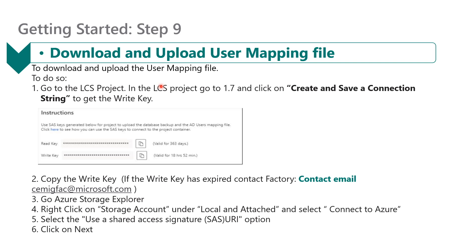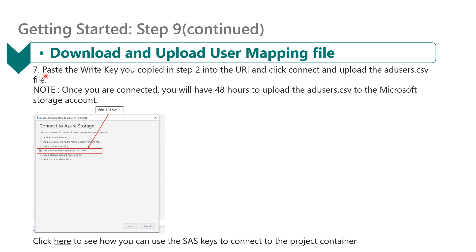Once you've reached out to the Microsoft factory team, they will respond asking you to download and upload the user mapping file. Go to the LCS project, click on 1.7 and select Create and Save a Connection String. Click on the right key and copy it — if the right key is expired, contact the factory team so they can renew it. Go to Azure Storage Explorer, right-click on the storage account under Local and Attached, select Connect to Azure, select the Use a Shared Access Signature (SAS) URI option, click Next, paste the right key into the URI, and click Connect to upload the AD user CSV file. Once connected, you only have 48 hours to upload the AD user CSV to the Microsoft storage account.